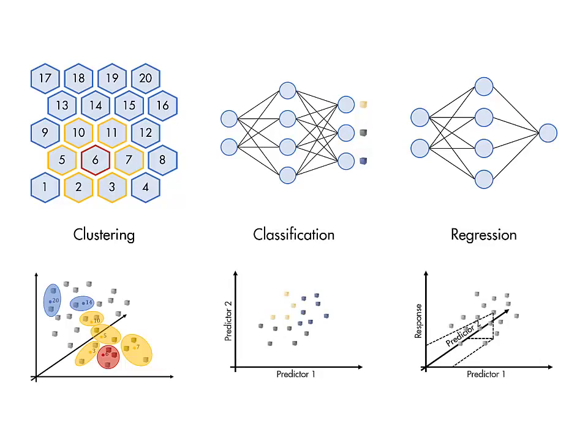Feed-forward networks can be used for predictive modeling, both classification and regression, depending on how the neurons are arranged.